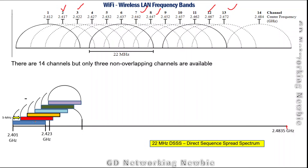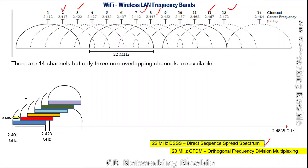The bandwidth or width of these channels is 22 megahertz when using DSSS — Direct Sequence Spread Spectrum technology. If using OFDM, the channel width is 20 megahertz instead.